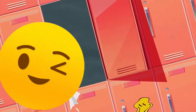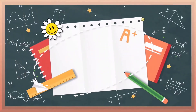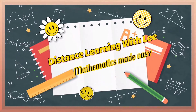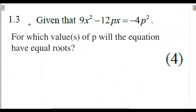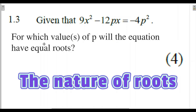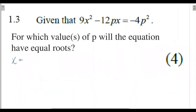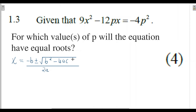Question 1.3: Given that 9x² minus 12px equals negative 4p², for which values of p will the equation have equal roots? This question is testing your knowledge of the nature of roots. We know that when we use the quadratic formula — x equals negative b plus or minus the square root of b squared minus 4ac, all over 2a — the discriminant tells us about the nature of the roots.